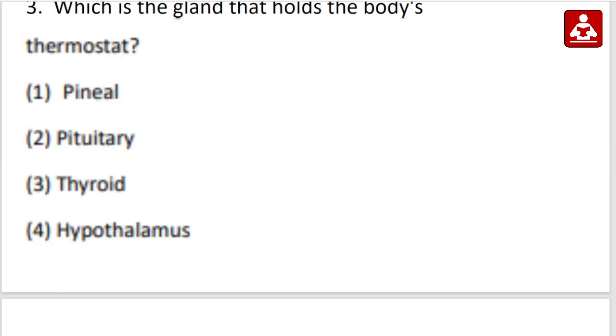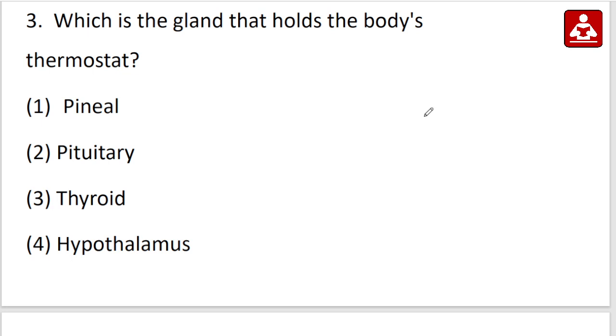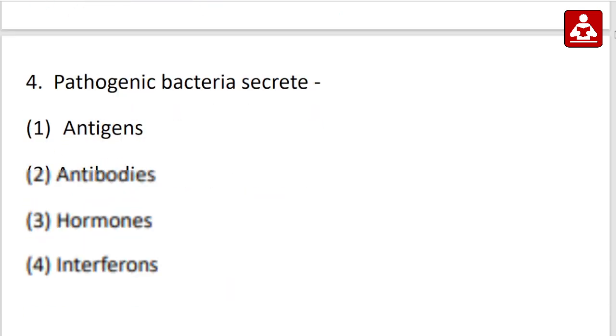Next question. Which is the gland that holds the body's thermostat? It means body rate temperature - which gland keeps it constant? Option 1 Pineal, Option 2 Pituitary, Option 3 Thyroid, Option 4 Hypothalamus. Option 4. Hypothalamus. Option 4.